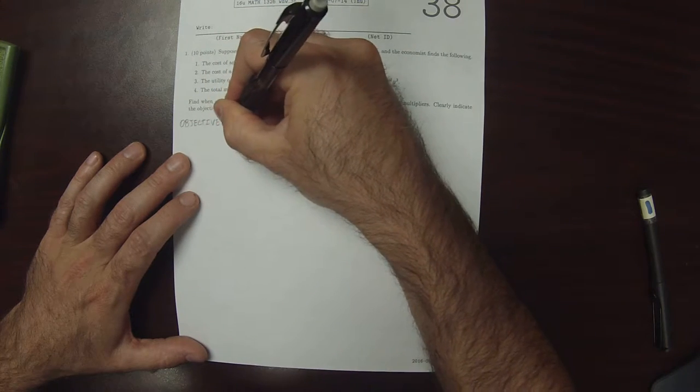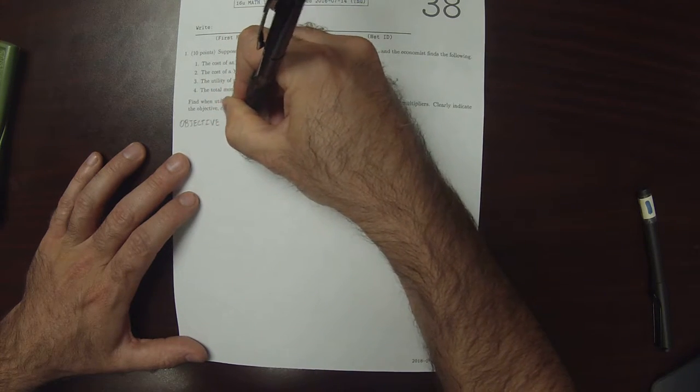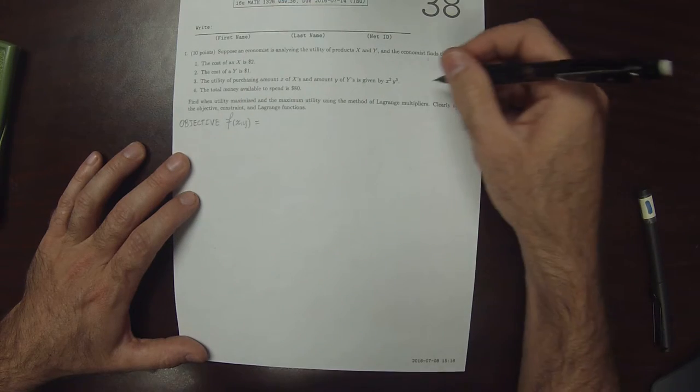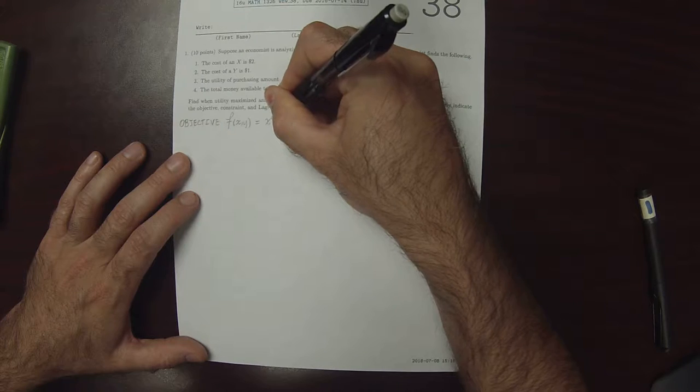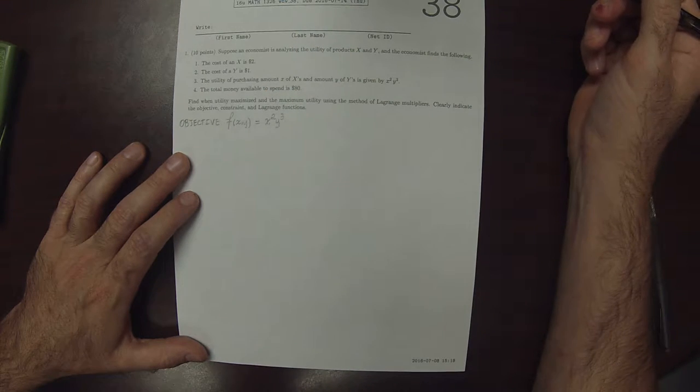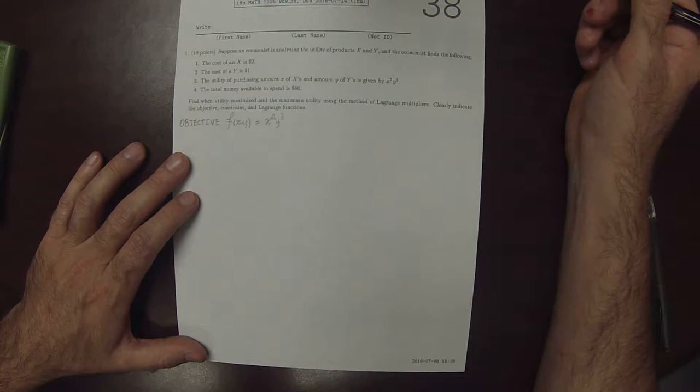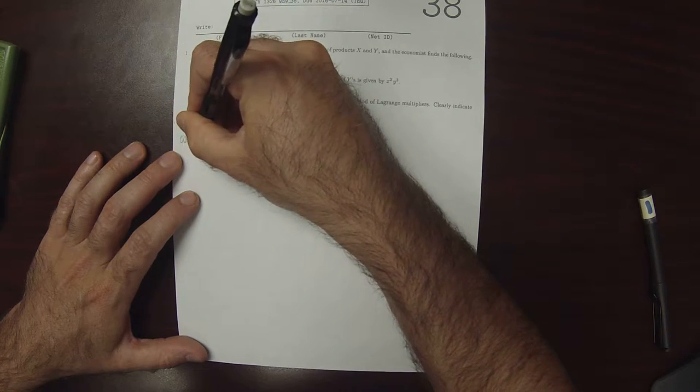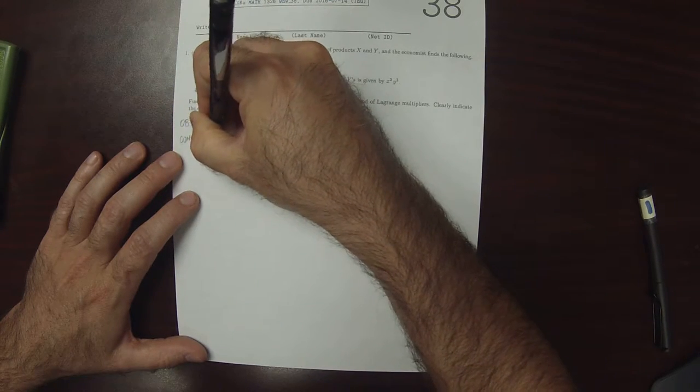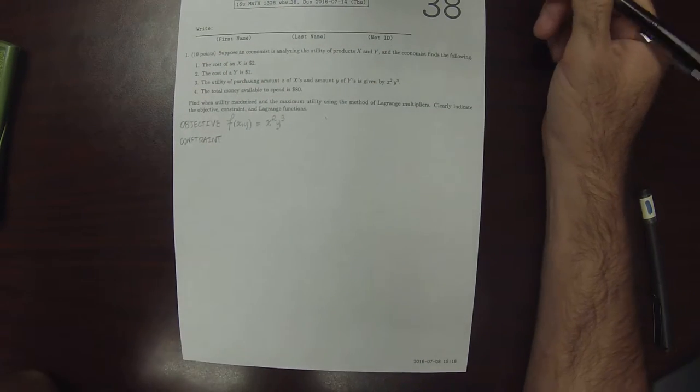The objective is f of x and y is x squared y cubed, but the constraint is going to require a little more work. The constraint function is only described.